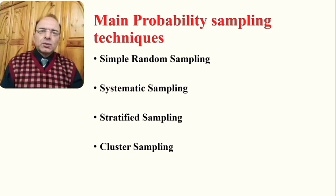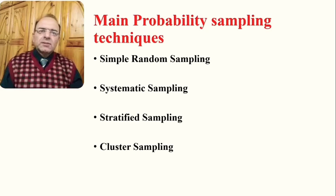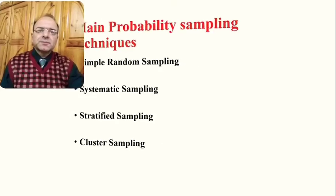The main types of probability sampling include simple random sampling, systematic sampling, stratified sampling, and cluster sampling. We will now discuss each of these one by one with simple definitions and examples of these different types of sampling techniques used in survey researches.